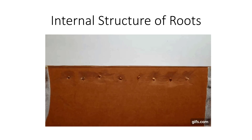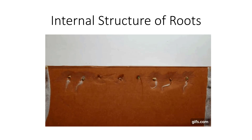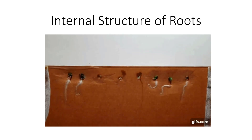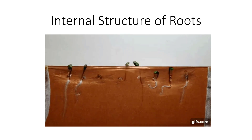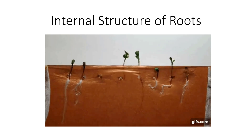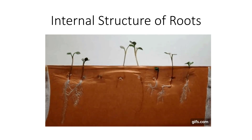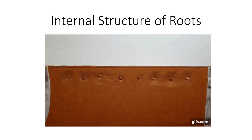We often don't think about how quickly a seed grows, depending on the seed and what is involved. We know it has roots, stems, and leaves, but there are many moving parts involved for everything to occur. With these radish seeds, we see an initial radicle come out that forms the first root. How does it know which way is down? I'm Dr. DeBusk, and in this video, I will talk about the internal structure of roots.